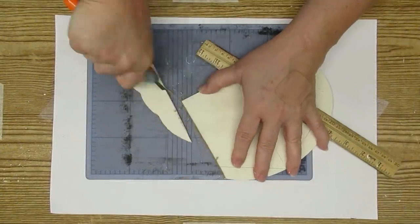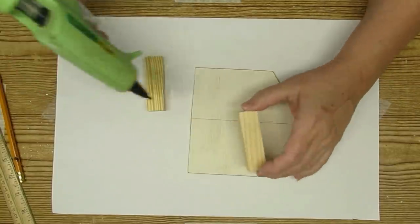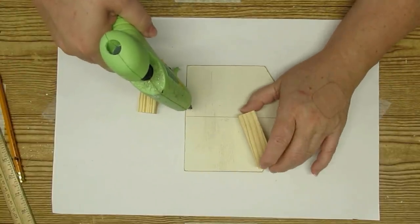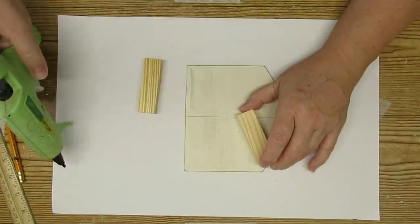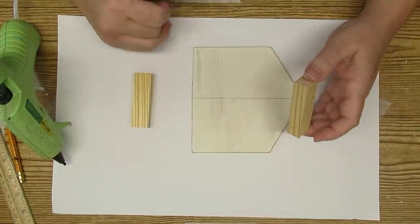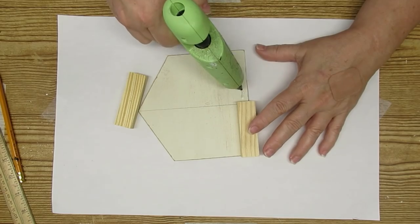This next DIY is using a scrap piece of sign from the Dollar Tree. I cut it out into a house shape and now I'm going to add a couple of large tumbling tower blocks to the back. Then I'm going to continue with some more blocks and build a box behind the house.